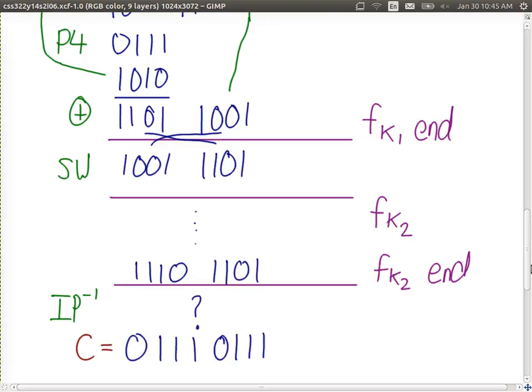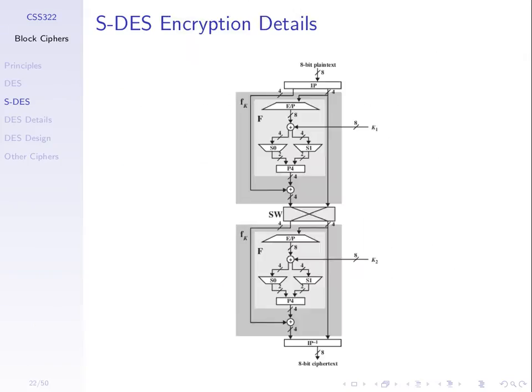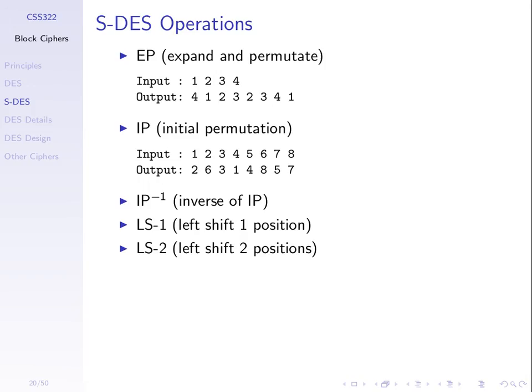That is, if we take 8 bits, apply IP — in this case it's defined — we get the bits rearranged such that the second bit becomes the first bit and so on. The inverse of that should be such that when we take our output 8 bits and apply the inverse, we should get our bits back in the original order. That's what the inverse defines, so you need to work out what that is.